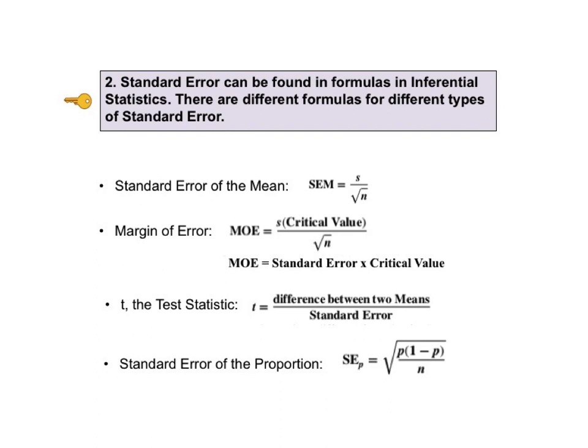t, the test statistic, can be described generically as the difference between two means divided by the standard error. The formula for t is different for each of the three types of t-test because the standard error component of the formula is different for each.